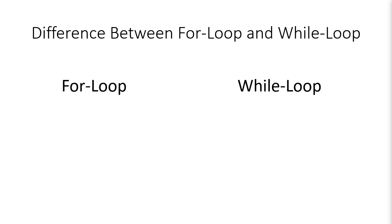A loop is basically a block of code that iterates a number of times. So why do we need a while loop if we already know a for loop? To answer this, let's understand the difference between a while loop and a for loop.